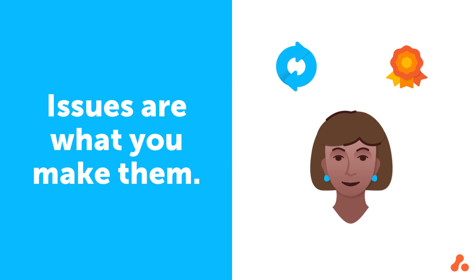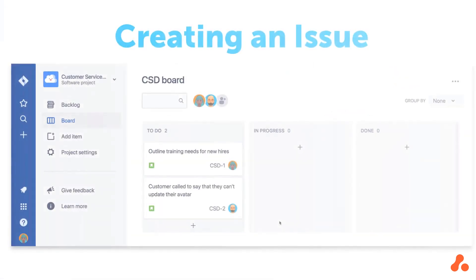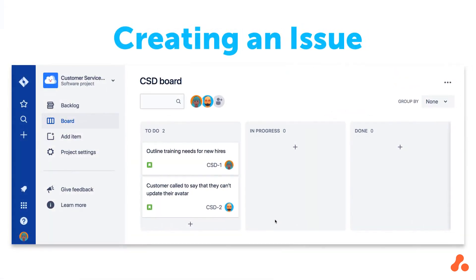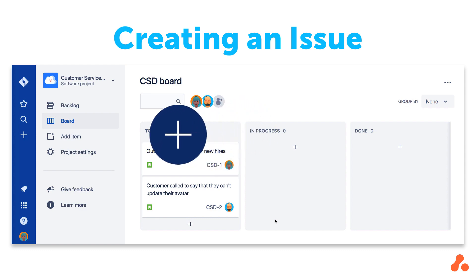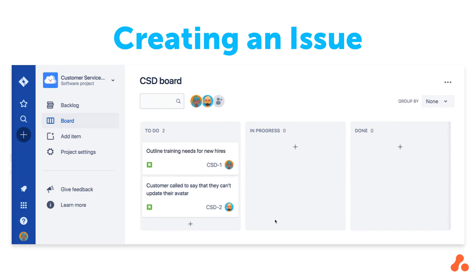In this video we talk about creating and editing issues. Depending on your project template, you might have a couple of different ways to create an issue in Jira Cloud. The first is to create an issue using the plus sign in the global left sidebar of Jira, but the more commonly used method is to create an issue on your project's board.